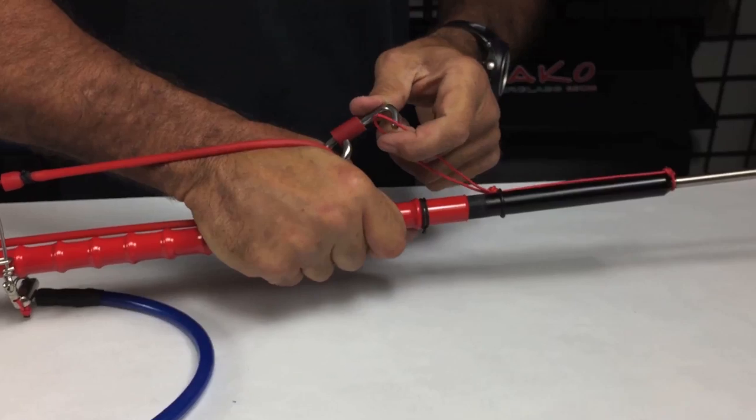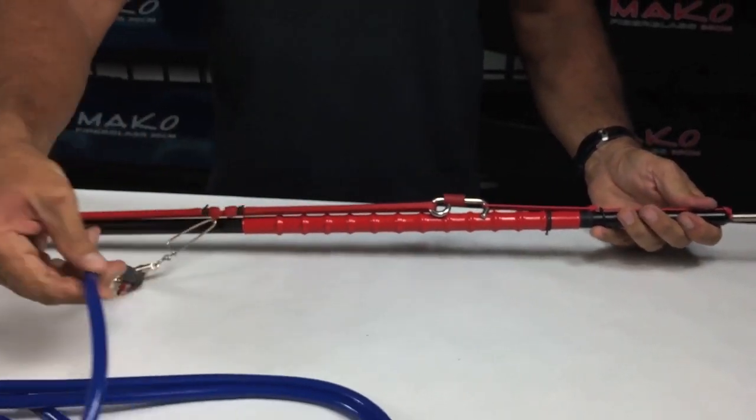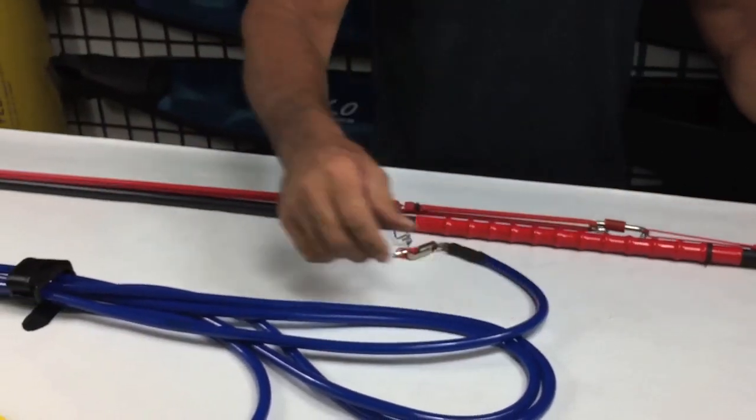Now, with the resting hook reinstalled, we'll have a look at the complete rigging that consists of the resting hook and Dyneema loop, float line, and float.